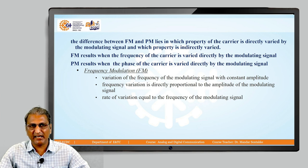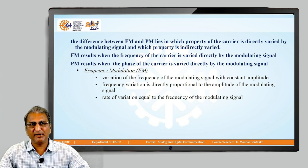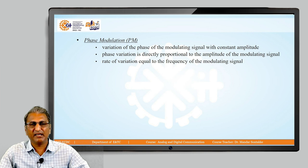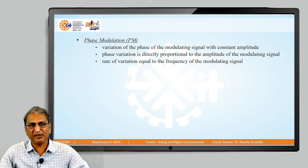FM results when the frequency of the carrier is varied directly by the modulating signal, and PM results when the phase of the carrier is varied directly by the modulating signal. In FM, frequency variation is proportional to the amplitude of the modulating signal, and the rate of variation equals the frequency of the modulating signal. Similarly, in PM, phase variation is directly proportional to the amplitude of the modulating signal, and the rate of variation equals the frequency of the modulating signal.